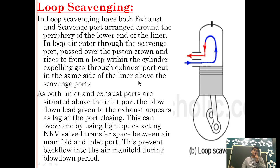In earlier engines, the exhaust port and the scavenge port were both cut in the liner. After the exhaust is completed, exhaust gases are driven out through the exhaust port when the piston is at BDC. As the piston covers the scavenge port, the incoming fresh air drives out the remaining exhaust gas from the piston crown and compression space through the exhaust port. As the piston moves up and covers the scavenge port, it marks the beginning of the compression stroke.